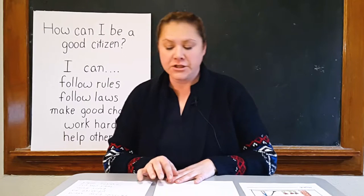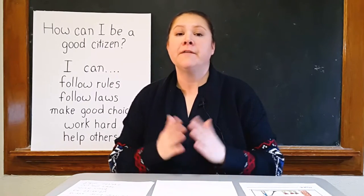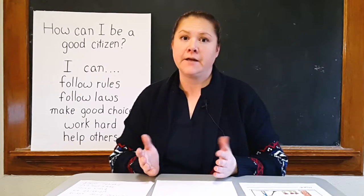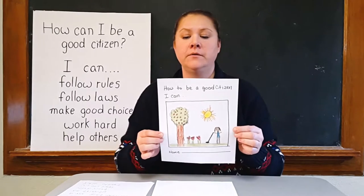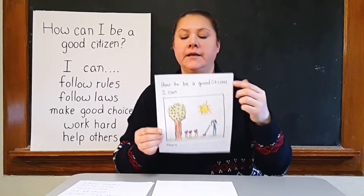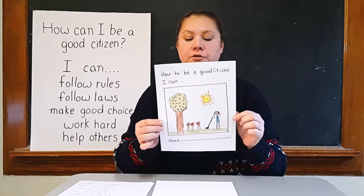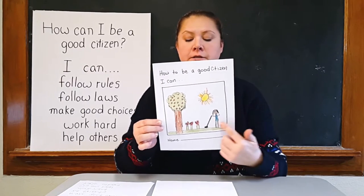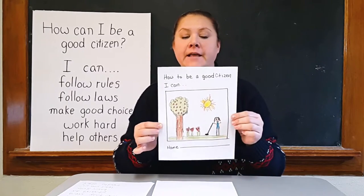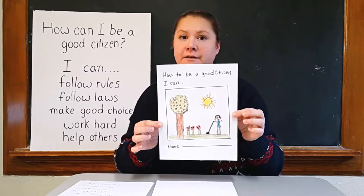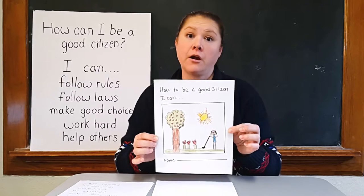After you have that discussion, the kids can do a drawing of something that they can do to be a good citizen — how they can help promote their community. This is just a little example. We have the title 'how to be a good citizen' and we started with 'I can,' and this child drew a drawing about planting some flowers, and that's how she helps her community and that's how she's being a good citizen.